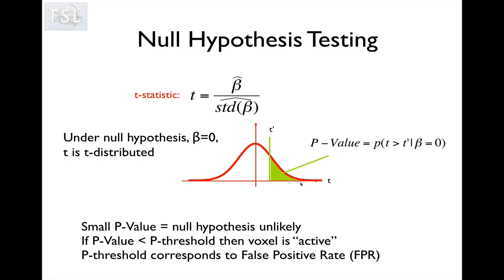What we typically do is say: there is some p-value that we consider so unlikely that if we encounter it, we're going to say we don't think the null hypothesis is true, and therefore we reject the null hypothesis and say that the t-statistic is significantly different from zero — i.e. we have an activation in that voxel. This p-value is typically 0.05, but obviously that is arbitrary and could take other values.